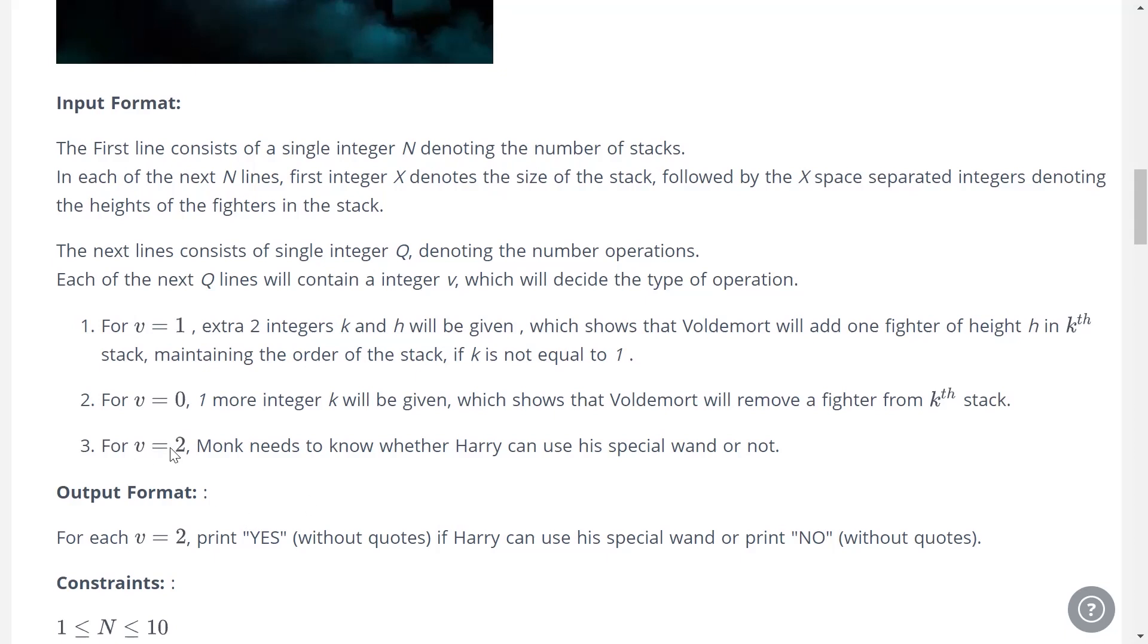For v equals 2, Monk needs to know whether Harry can use that wand or not. Whenever v equals 2 is present, we have got to print either yes or no.